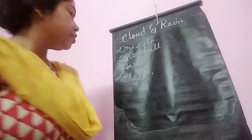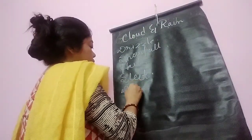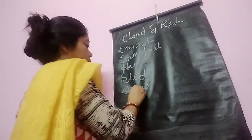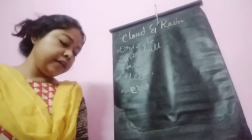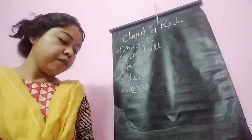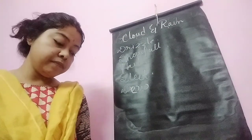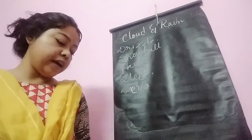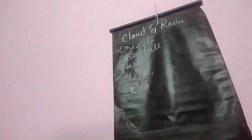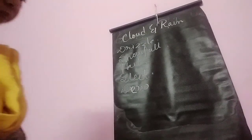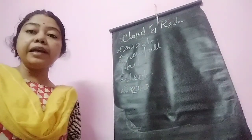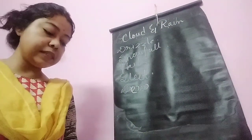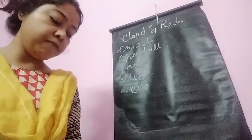Next definition is dew. On a winter night or a cloudless night when the land releases heat rapidly, the layer of air adjoining the earth surface cools down quickly. Small droplets are formed near the earth surface and it is called dew. Dew is commonly seen on grasses and leaves of plants.